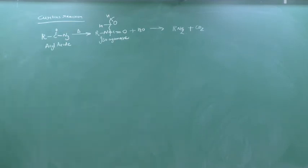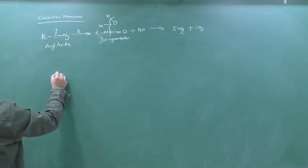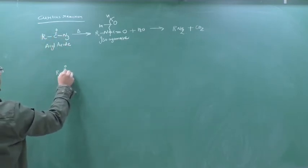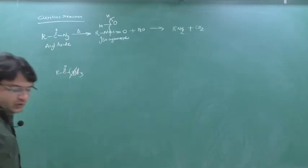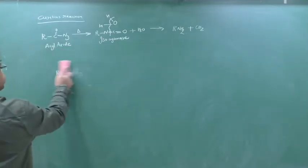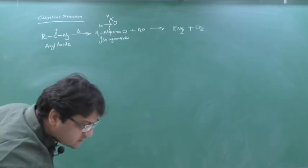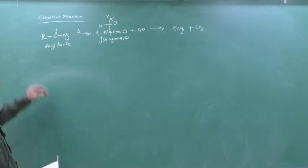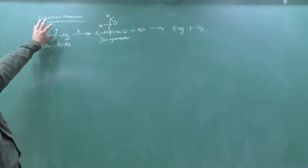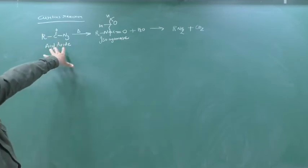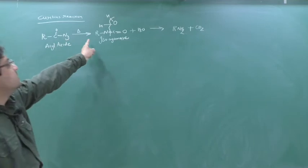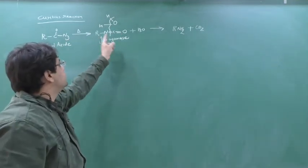So acyl-azide on heating gives isocyanate: R–N=C=O. Please remember this. Nitrogen has three bonds satisfied; carbon has four bonds; oxygen has a double bond — all satisfied. The structure R–N=C=O is known as isocyanate. Then we do hydrolysis — adding H₂O — and crack it to get CO₂ plus R–NH₂. This is how you obtain the amine.